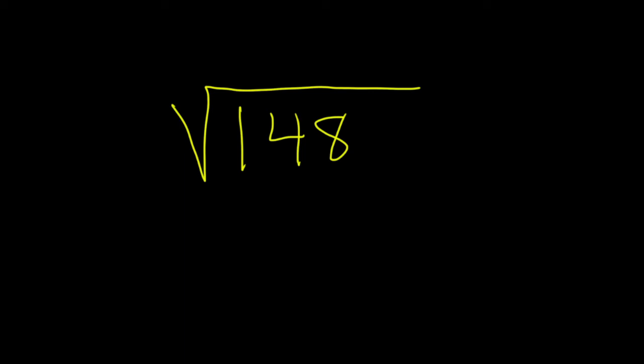Simplify the square root of 148. Solution: To do this, we have to figure out how we can factor this in a way that will reveal a perfect square. In other words, a number whose square root is going to be a whole number.